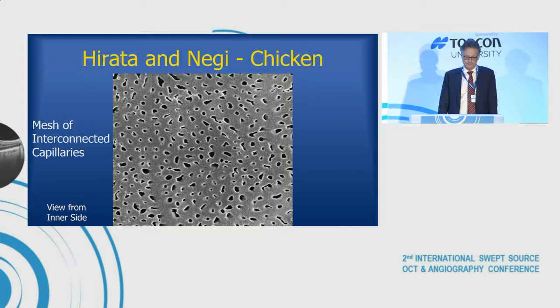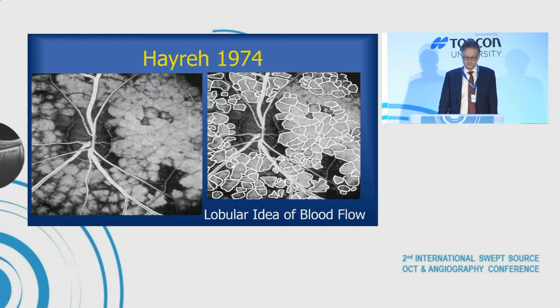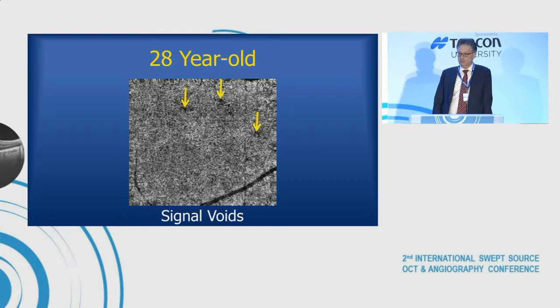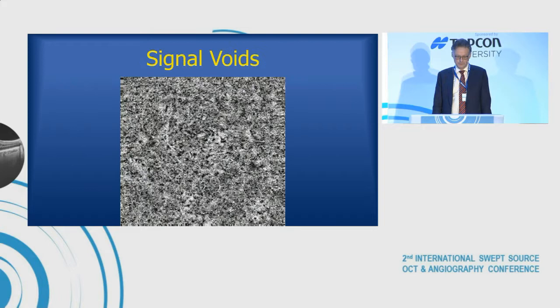So let's talk about choriocapillaris. The choriocapillaris is a mesh of blood vessels that's fairly uniform, but the back surface has arteries and veins that set up pressure gradients. We think of it as having lobular flow — Hayreh showed the lobular flow — and in the human eye the lobules are about a millimeter in diameter. Here's a choriocapillaris image of a 28-year-old; you can see flow voids or signal voids smaller than a lobule. I did a study on 104 eyes of 80 patients with a mean age of 71 years.